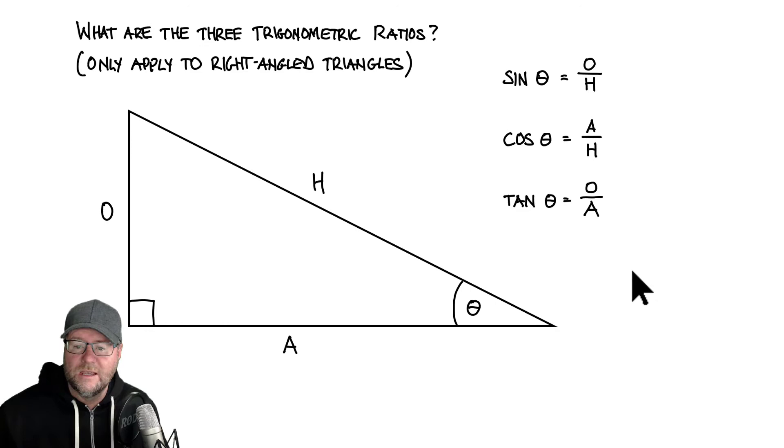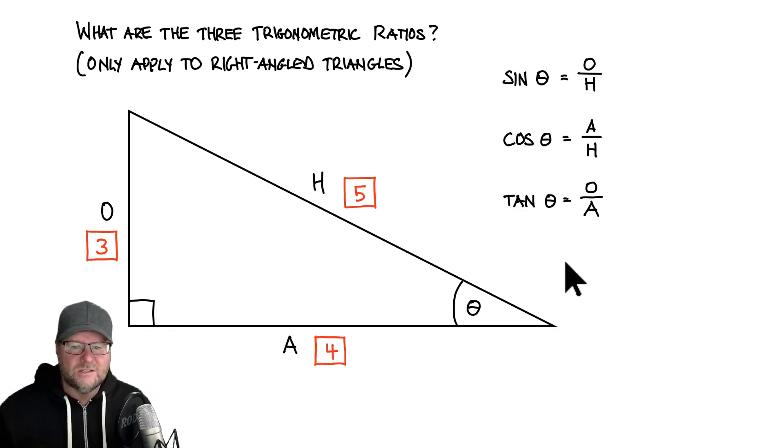They are our three trig ratios. Now let's put some numbers on here and just actually get some values. In this case, we'll do the sine one first, opposite over hypotenuse. So my opposite length to the angle theta is three and the hypotenuse is five. So I just do three over five. Now that's a number. I can put that in my calculator and I'll get a value of 0.6.